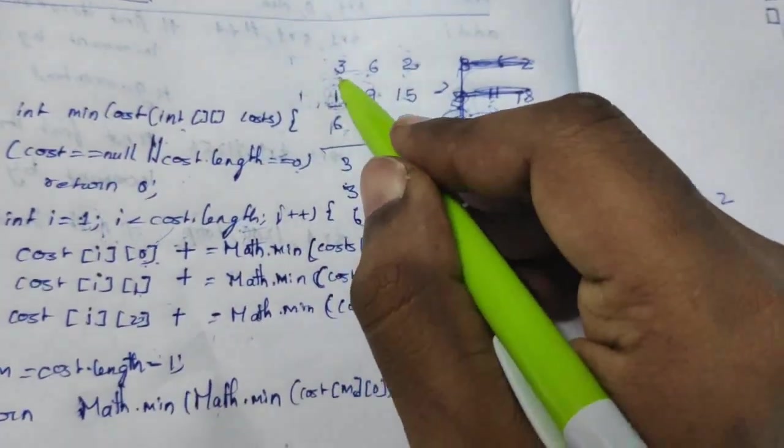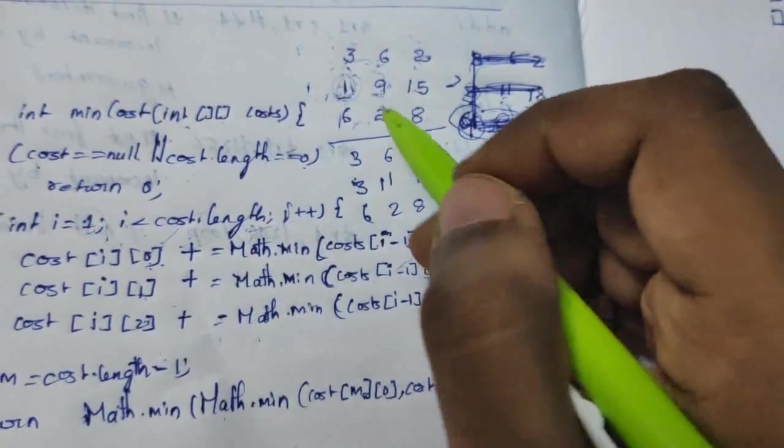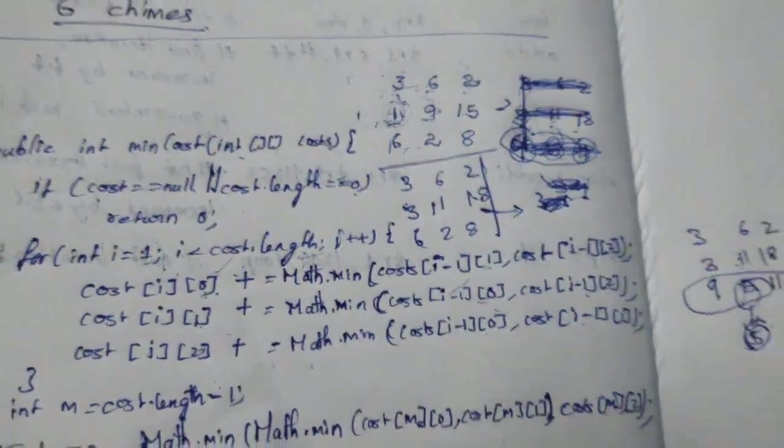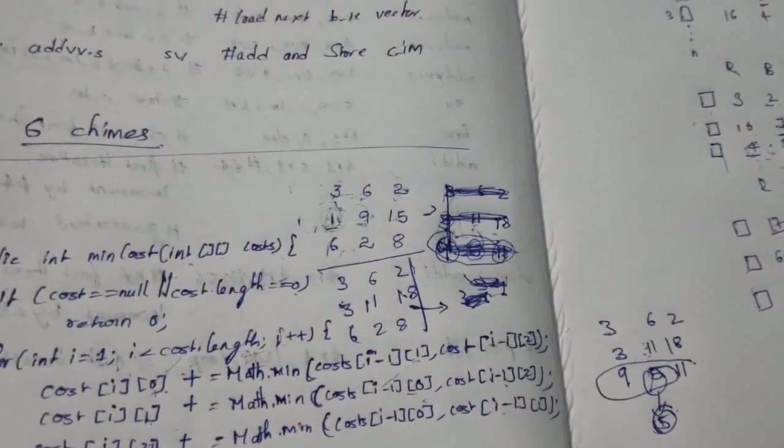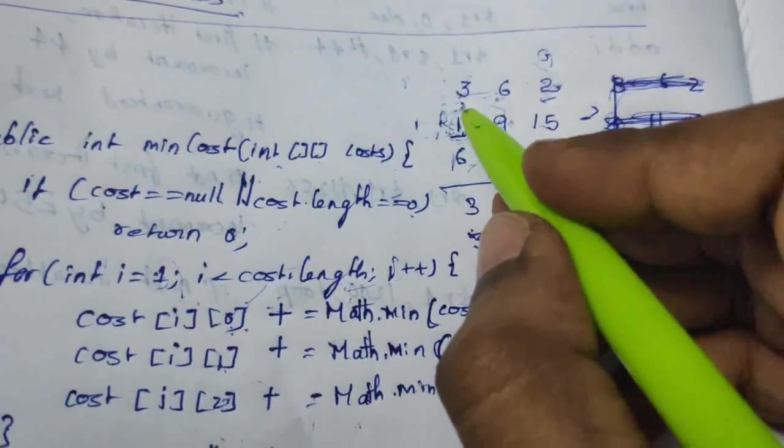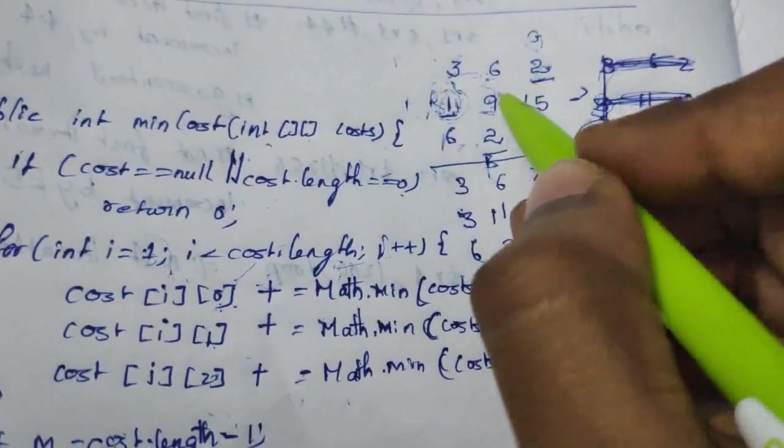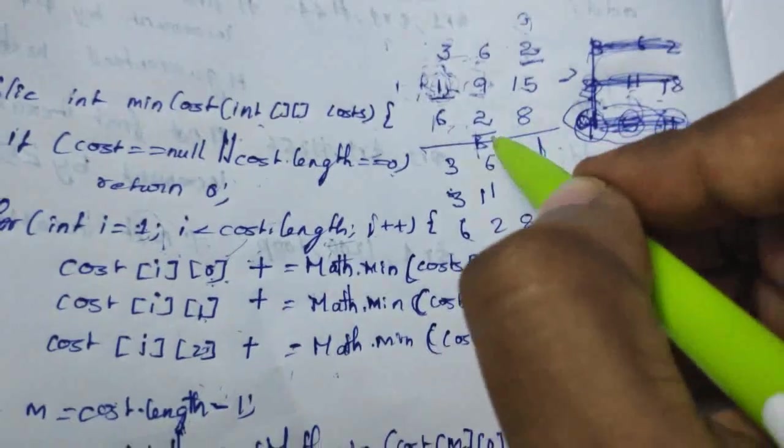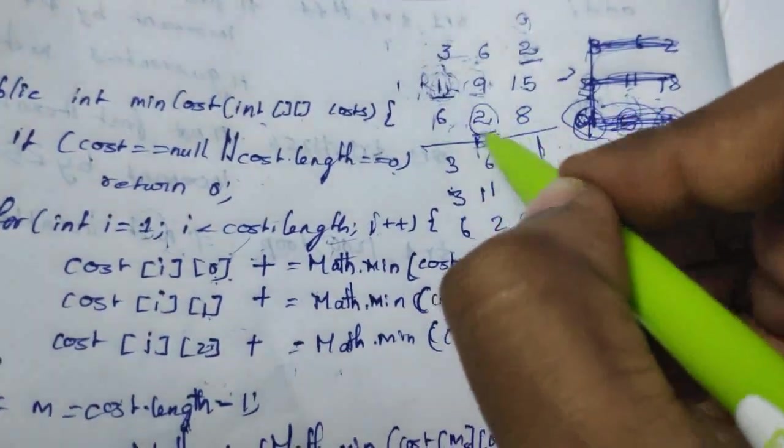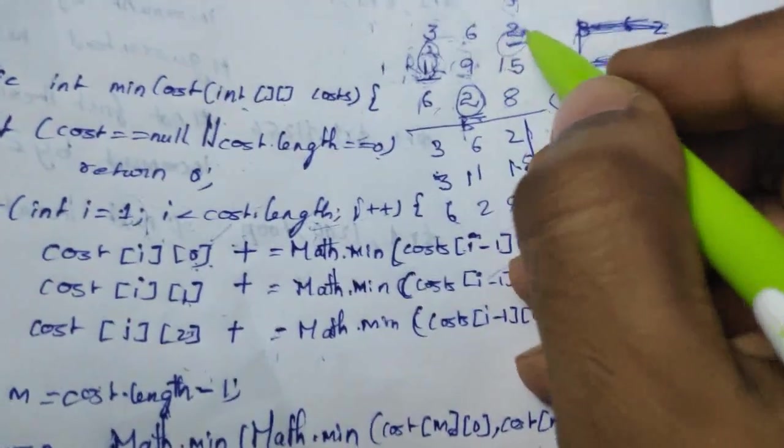So if you see, here is the answer. If we paint with the 2, 1, and 2, we will get sum of 5 which is our answer.